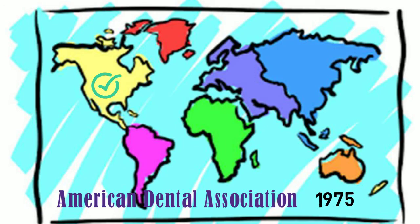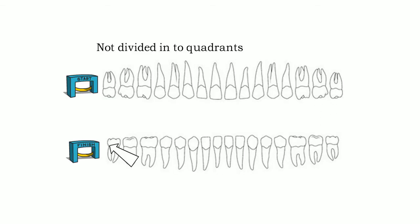Universal system was officially adopted by the American Dental Association in 1975. In this system, the jaws are not divided into quadrants. Tooth numbering starts from the last tooth in the right side of the upper jaw, continues in a clockwise manner to end at the last tooth in the right side of the lower jaw.